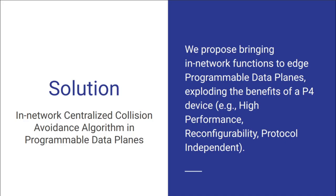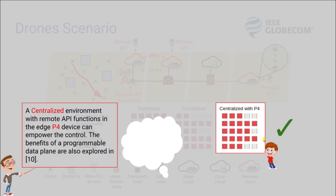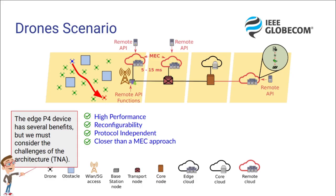We propose an in-network centralized collision avoidance algorithm in programmable data planes. We bring the network functions to the edge programmable data plane, taking advantage of the benefits of a P4 device, like high performance, reconfigurability, and protocol independence. We propose a centralized environment with remote API functions in the edge P4 device. Some of the benefits of a programmable data plane approach in in-network applications were also explored in previous works. The edge P4 device has several benefits, including high performance, reconfigurability, protocol independence, and a solution that can be closer than a MEC approach.